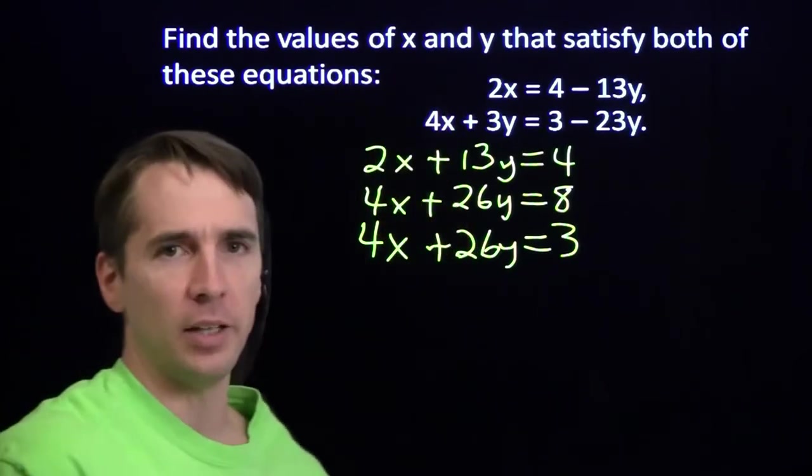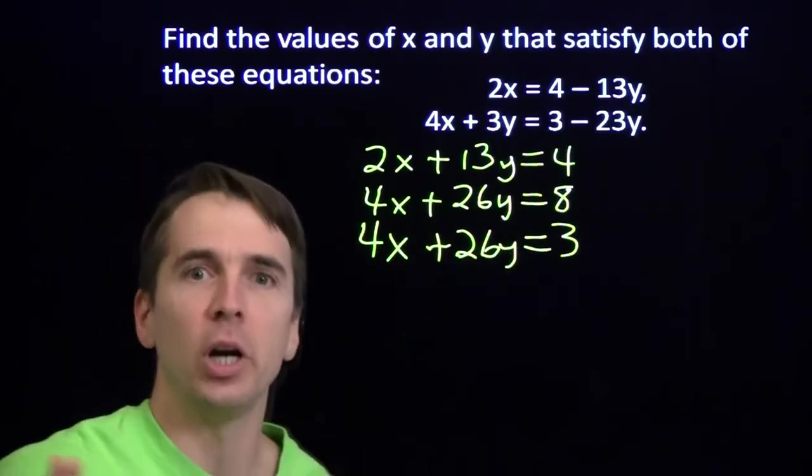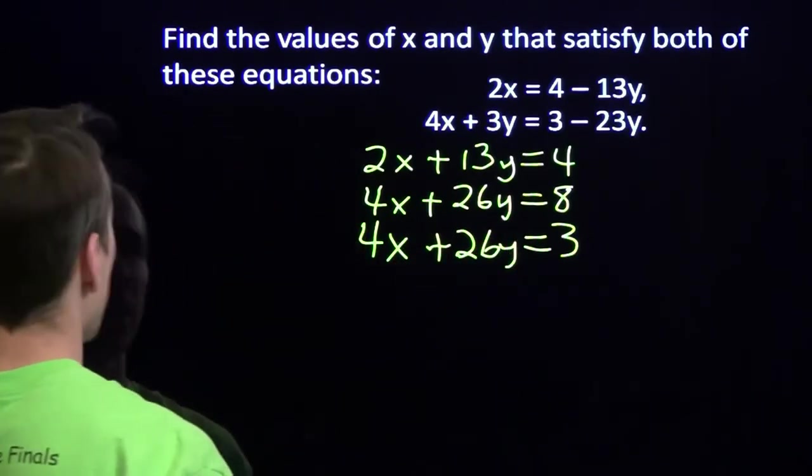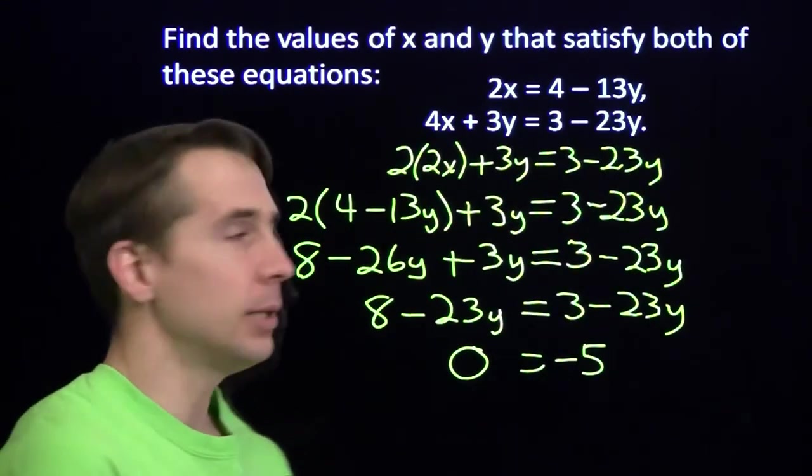It's impossible to find values of x and y that satisfy both of these equations. Because 8 and 3 are not the same. Just like 0 and negative 5 are not the same. And this 0 and negative 5 are not the same either.